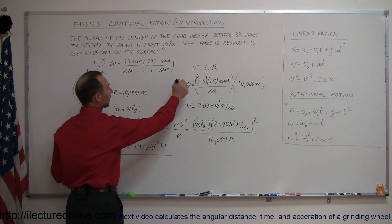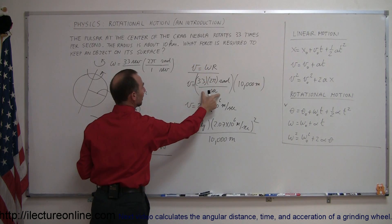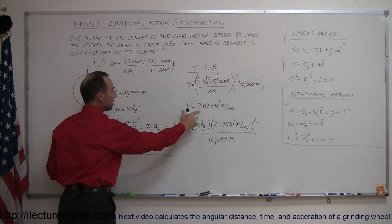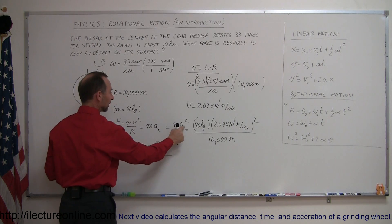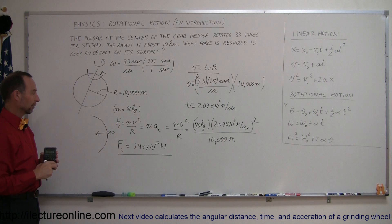Since we found v by converting from angular velocity to linear velocity using that equation, we found the linear velocity, we plug that in here, we squared it, and it gave us the centripetal force required to stay on the surface.